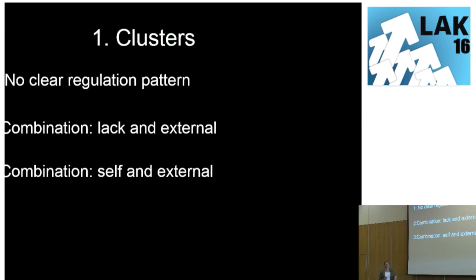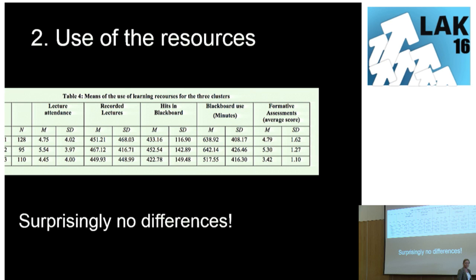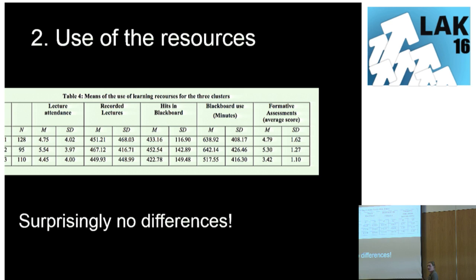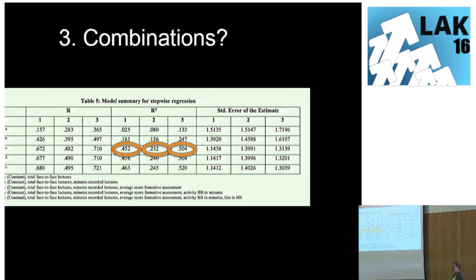I was happy — I could proceed. Then I started to see how these different clusters use the different learning resources. And I had to cry a little bit, because there were no differences. That was kind of strange, because I expected that the students who were externally regulated would be in the LMS all the time and attending lectures a lot. When I was done crying, I went on to my third research question: how are those combinations of learning resources associated with explained variance within these different clusters? And then I got really happy, because then I really saw some differences.